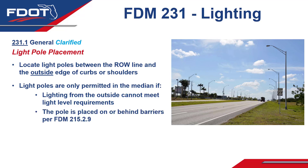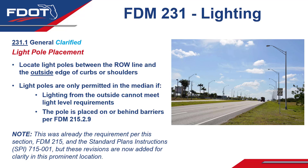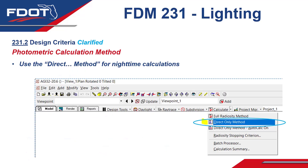Also, if a pole is placed in the median, it has to be on or behind barriers per FDM 215.2.9. This was already the requirement per FDM 215 and the Standard Plans Instructions for Index 715001, but these revisions are now added for clarity in this new prominent location right at the start of Chapter 231 for lighting.